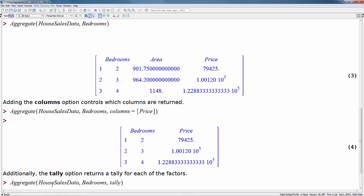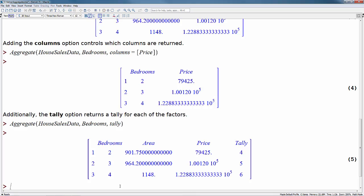Additionally, the tally option returns a tally for each of the factors. So we just add in tally at the end, and now we can see how many of each one of our observations belong to each one of these factor sets. So here we can see that we have four two bedroom apartments, five three bedroom apartments, and six four bedroom apartments in our data.